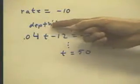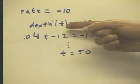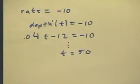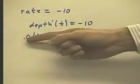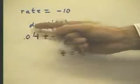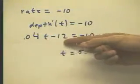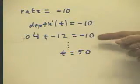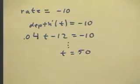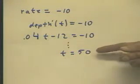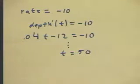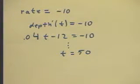Well, we set the depth prime, or the derivative of the depth function of t, equal to negative 10. We substitute for the depth function of t, or the rate of change function, .04t minus 12, which we've just obtained, equal to negative 10. And we solve, and we easily find that the clock time is 50. We might assume 50 seconds when the depth rate of change reaches negative 10.